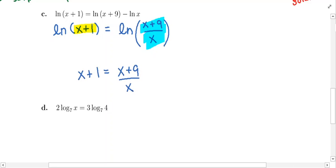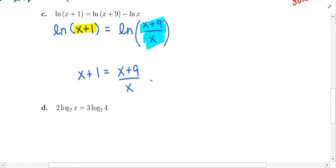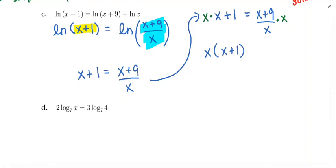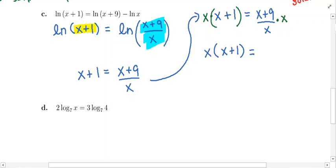Now we need to solve this for x. It's a little tricky because we have a fraction involved. The trick to get rid of the fraction is — since we have an x in the denominator, we multiply both sides by x. On the right side, the x in the bottom cancels with the x in the top, so we're just left with x plus 9. On the left side, we get x times the entire quantity x plus 1, so we need parentheses because the x has to be distributed.